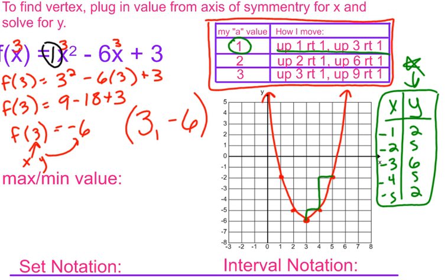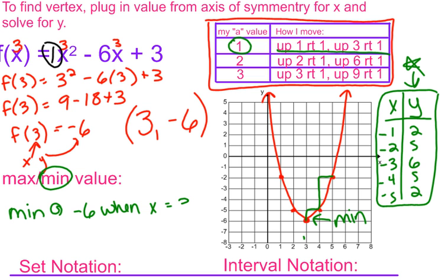For the minimum/maximum, I ask: do I have a lowest or highest point? My parabola goes up, so this is a minimum value. I would write: minimum at y = -6 when x = 3. The vertex is (3, -6), and that's where the minimum is occurring.